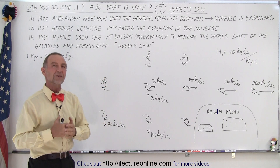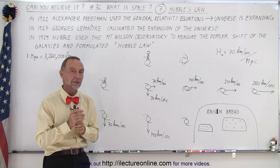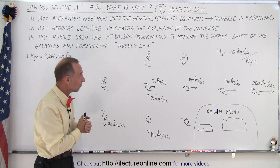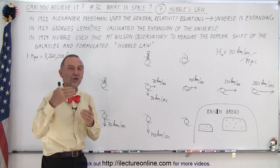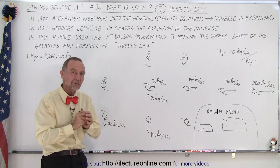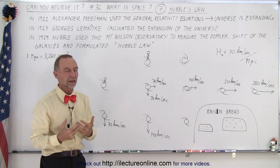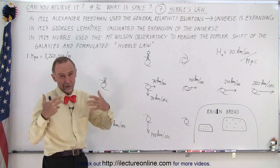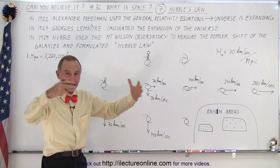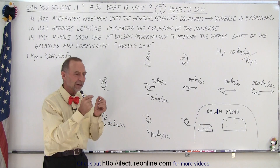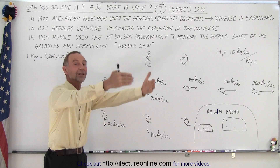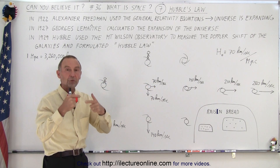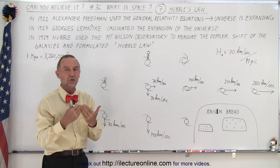Then Hubble came along in 1929. He used the biggest telescope in the world at the time, built on top of a mountain near Los Angeles called Mount Wilson — the Mount Wilson Observatory. He started measuring the Doppler shift of these fuzzy little things he was looking at, which turned out to be galaxies. They began to realize those fuzzy clouds, first thought to be molecular clouds inside our own galaxy, were actually other galaxies beyond the limits of our Milky Way. He began to realize those galaxies were moving away from us because he could measure the redshift.